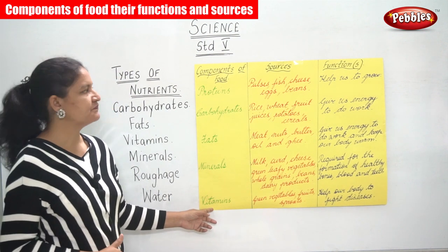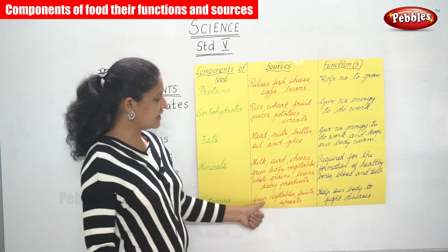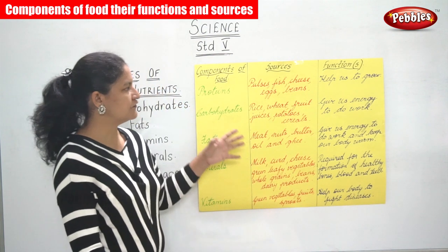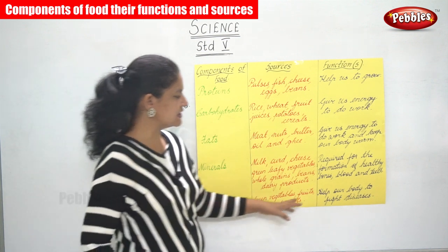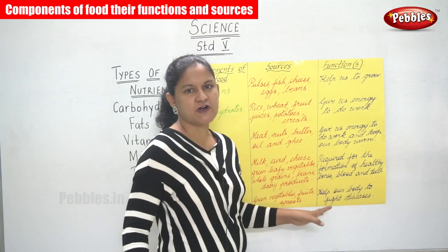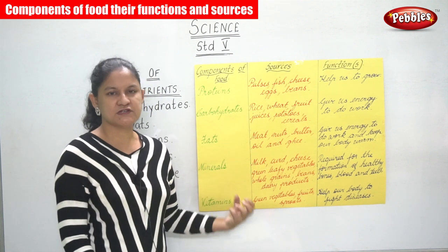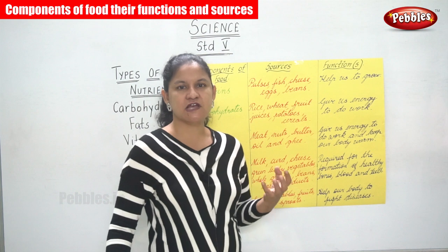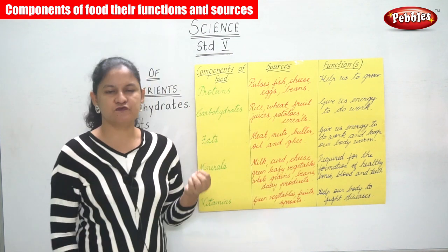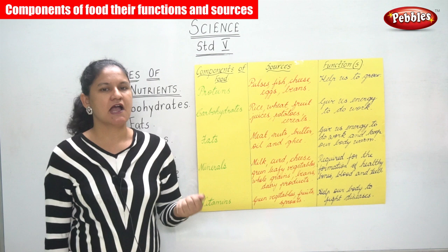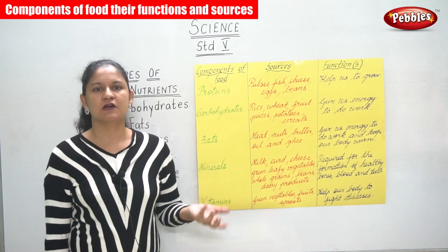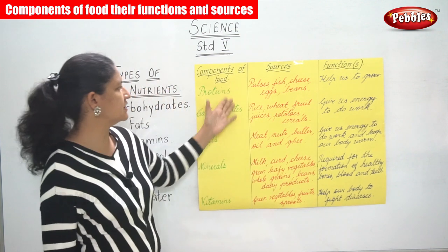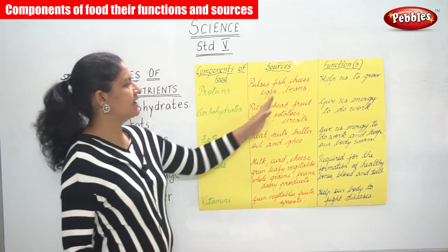The next component is vitamins. The sources are green vegetables, fruits, and sprouts. The function of vitamins is they help our body to fight disease. Vitamins enable us and give us the immunity to fight against diseases, so we don't catch any disease very fast.